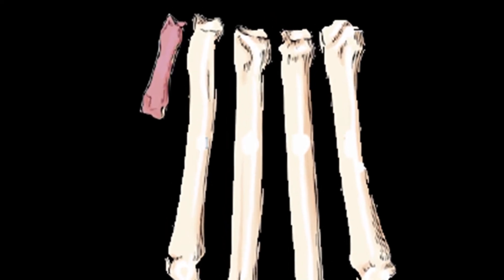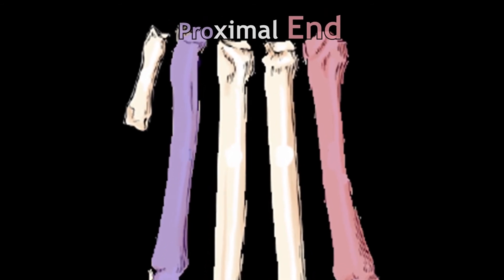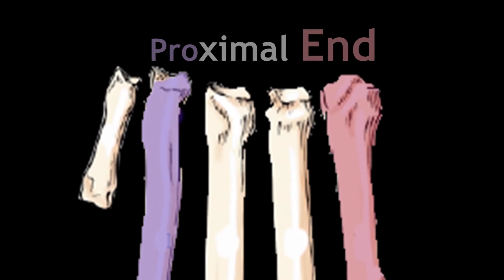To summarize how to differentiate between metacarpal bones: the first metacarpal bone is very easy to identify as it is the shortest among all. The third and fourth are the longest and are four-sided. The second and fifth are smaller and three-sided. To distinguish between the second and fifth, the fifth metacarpal bone is slightly shorter than the second and is wider at the proximal end.